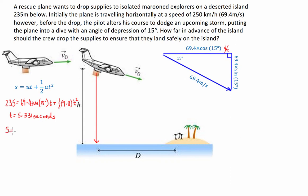S is equal to Vt, where S is going to be equal to the velocity, which is 69.4 cos of 15, times time, which is 5.331. And that gives us a total distance of 357.4 metres.